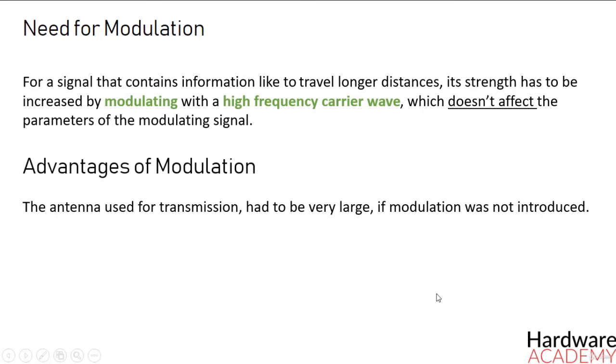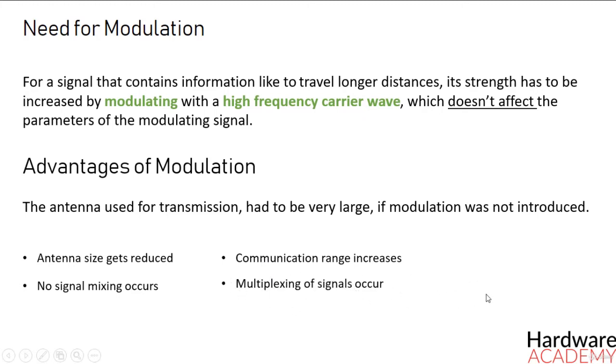Following are some of the advantages for implementing modulation in the communication systems. Antenna size gets reduced, no signal mixing occurs, communication range increases, multiplexing of signals occur, adjustments in the bandwidth is allowed, and reception quality improves. As you can see, there are quite a few advantages.